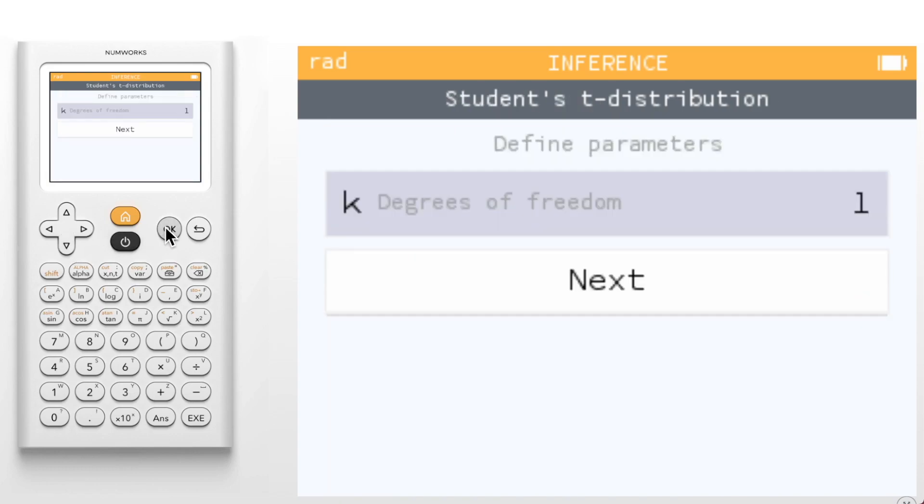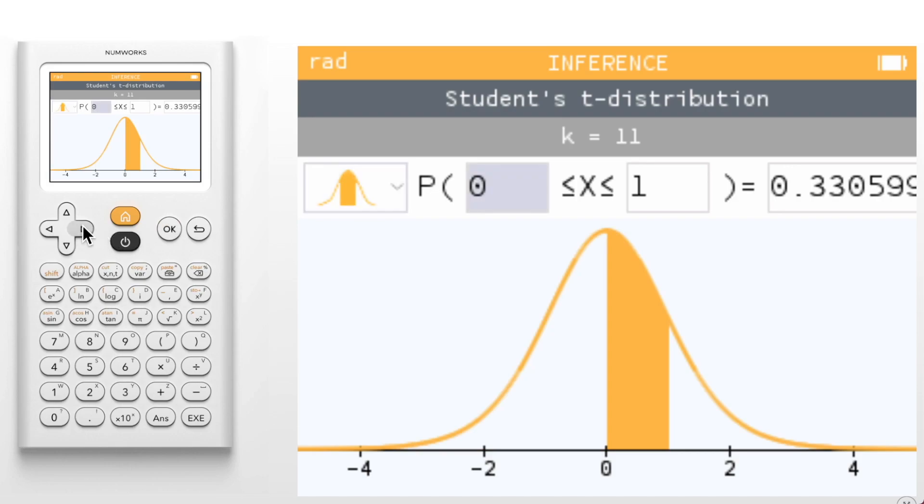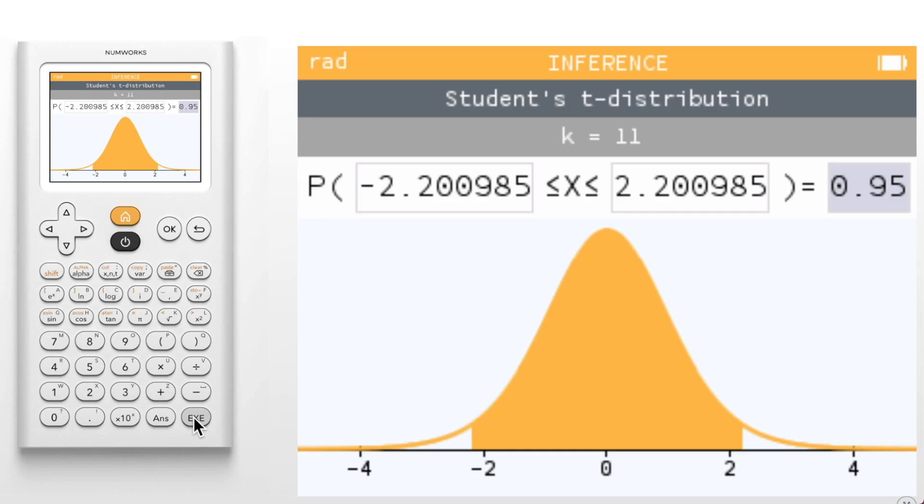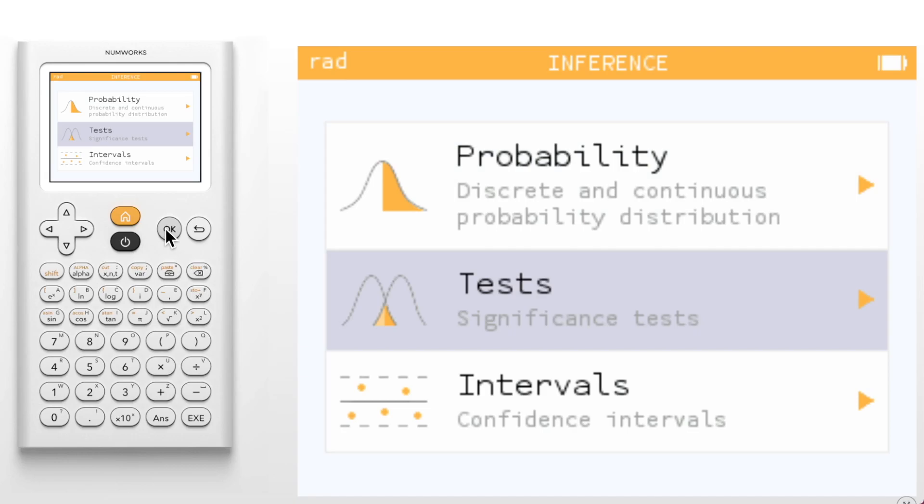For example, if we create a t distribution with degrees of freedom 11 and change to the middle area, we can now enter a probability. This was previously not an option. Significance tests now showcase a new visual on the conclusion screen for easy comparison of the p value and alpha.